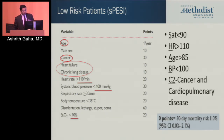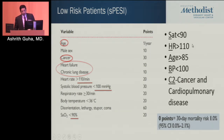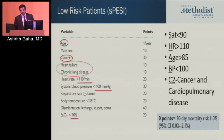Because the PESI score has 11 variables, a simplified PESI score was developed. It looks at oxygen saturation less than 90%, heart rate over 110, age over 85, systolic blood pressure under 100, and presence of either cancer or cardiopulmonary disease. If you don't have any of these, you are at very low risk of mortality and can be treated at home. If you have any of these, your risk of mortality can be as high as 10%, and you probably need to be admitted.